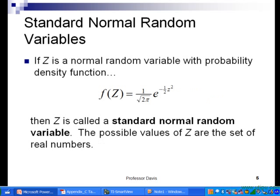In slide number five, we want to standardize things so we can use other means than just pure computation to find probabilities. We can say that if z is a normal random variable with probability density function—notice we define that as f of z, a simplified version—then z is a standard normal random variable. The values of z generally range from about negative three and a half to three and a half.